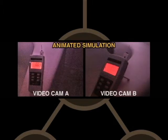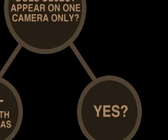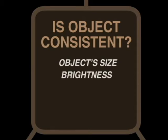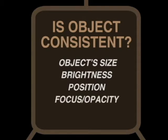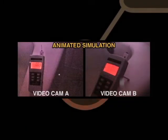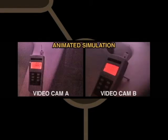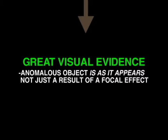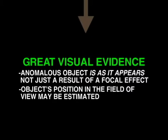But if you're using stereo cameras and it only appears on one camera, it is most likely a focal effect. If it is on both cameras, does it match the criteria of size, brightness, position, focus, opacity, and movement if it's on video? If they don't match, it's not good evidence. But if it does match on both cameras using this criteria, congratulations — you have great visual evidence. We know it is as it appears and we can estimate its size and its position in the field of view.